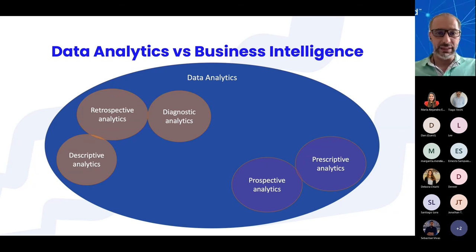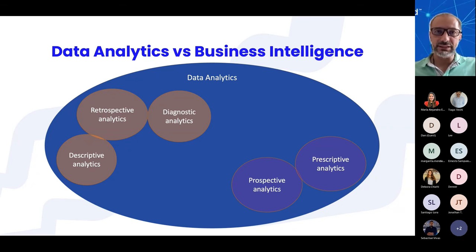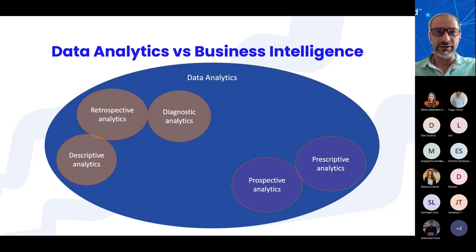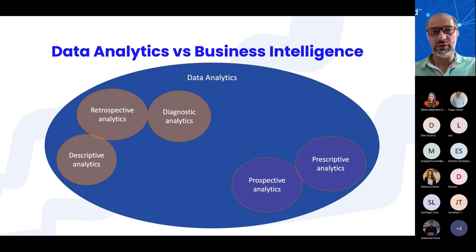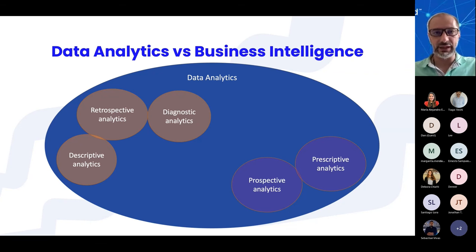We also have diagnostic analytics, which tries to answer the question: why did it happen? — to identify the causes. Then we have prospective analysis, which answers: what will happen, or more precisely, what is most likely to happen — we are not fortune tellers. We also have prescriptive analytics, which answers: what should we do? And there is preventive analytics, which tells us what we can do to avoid an undesired result that is perceived as a possible future outcome.